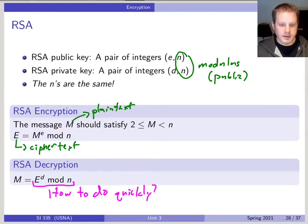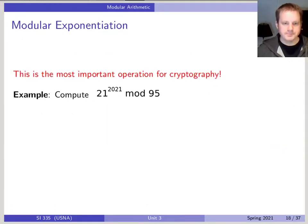And to answer that, I want to go to this slide here. And I want to think about this example problem of computing 21 to the power of 2021 modulo 95. So this is the example that we're going to look at. And of course, we want to think about how to do this quickly.